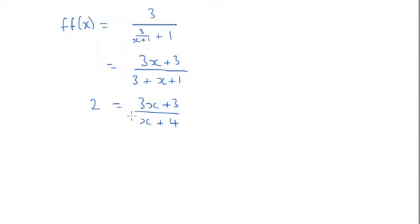So if we now just rearrange this, we're going to get 2x plus 8 equals 3x plus 3. So x is going to equal 5.